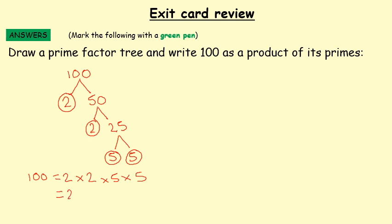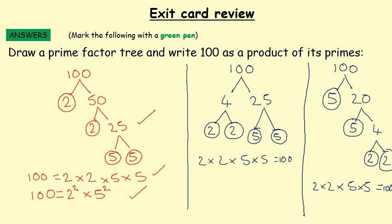And I know some of you went even further and said two times two is two squared, and five times five is five squared, so you can write it like that. Both of those answers are absolutely right, so you get three marks for this question. I'm just going to show you a couple of other ways you could have broken this down as well. In blue, there were a couple of examples of different ways you could have broken 100 down into product of primes. But the key thing is your answer is always the same, regardless of how you break it down, so long as you just end up with prime numbers at the end.